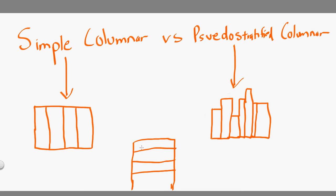We know there are four different types of shapes of epithelial cells. We have the squamous, the cuboidal, the transitional, and the columnar, which is what we're talking about here.